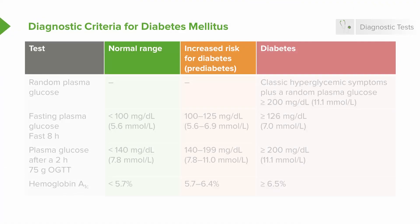Criteria for diagnosing diabetes are numerous, and this particular series of slides will take you through differentiating the normal range, pre-diabetes, and overt diabetes mellitus. A random plasma glucose in the setting of classic hyperglycemic symptoms — such as polyuria, polydipsia, polyphagia — plus a plasma glucose level that exceeds or is equal to 200 milligrams per deciliter will give you the diagnosis of diabetes.